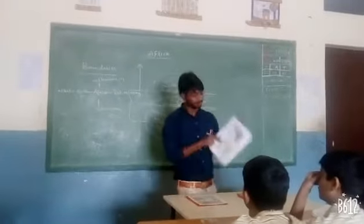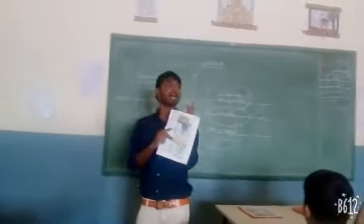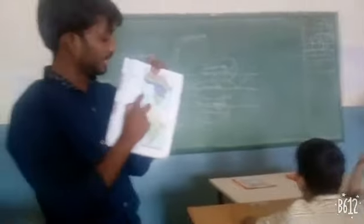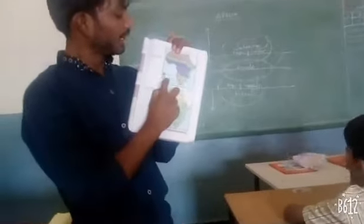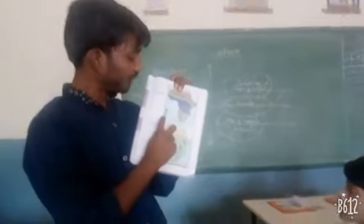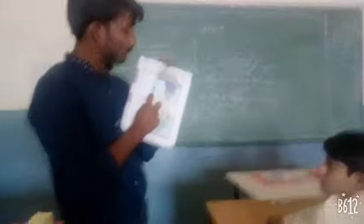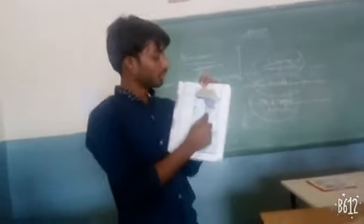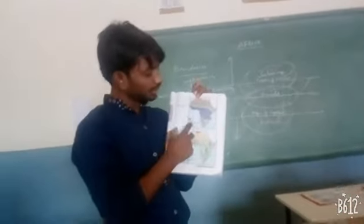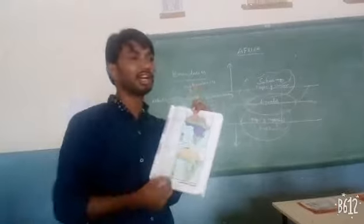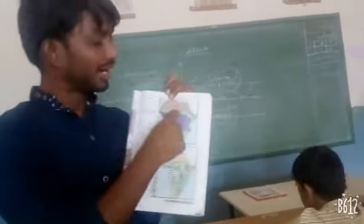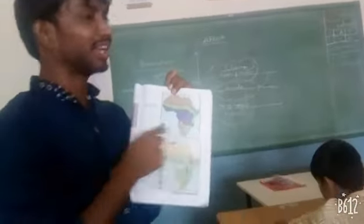Now see the rainfall map of Africa. The colors indicate: blue means high rainfall, green means medium rainfall, and the other color indicates low rainfall. Low rainfall is observed in the desert region. Next, medium rainfall is found below the Sahara Desert and above the Kalahari Desert.